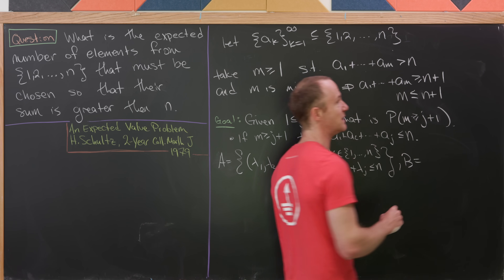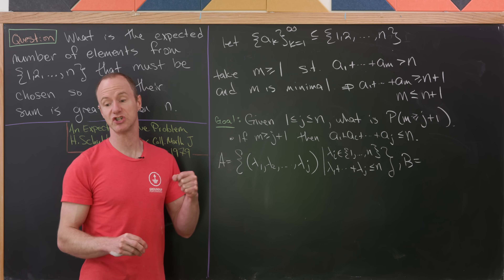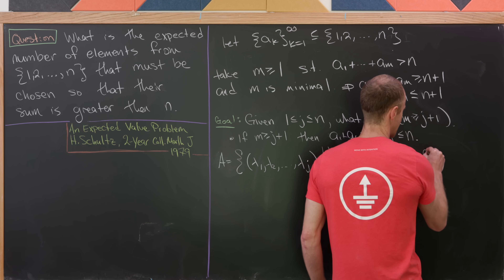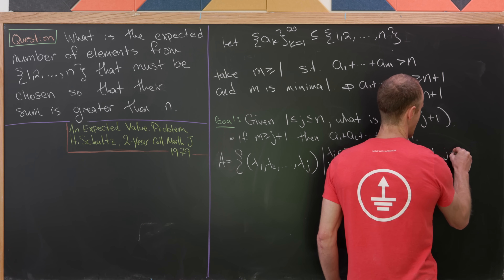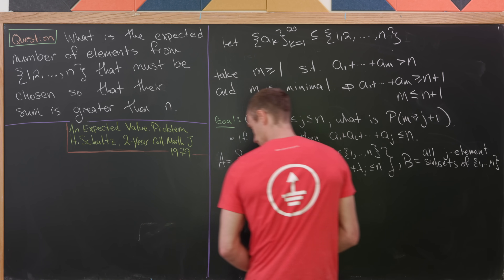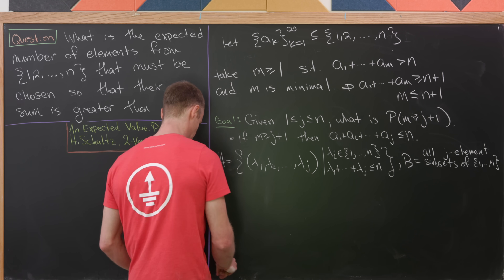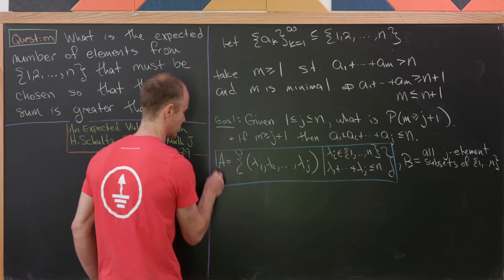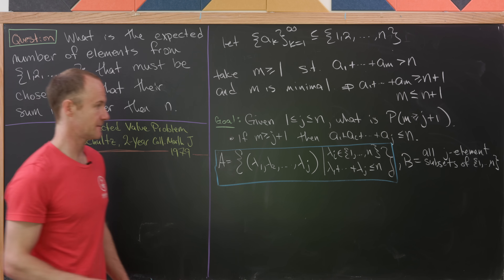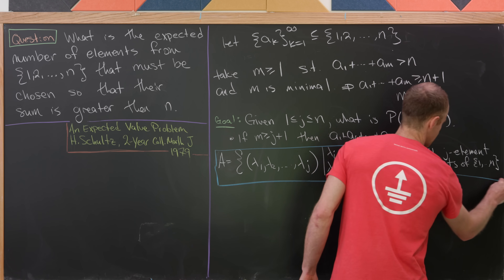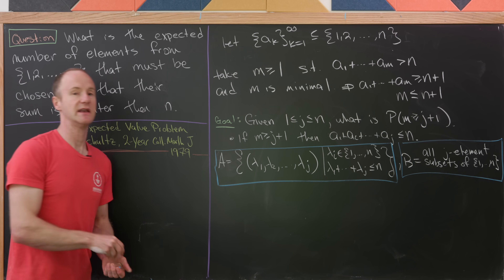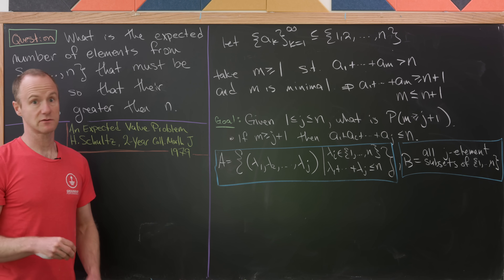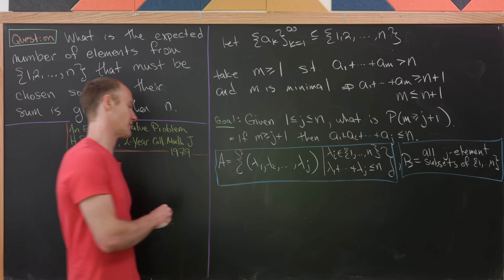Let B be the set of all j-element subsets of one through n. Now let's box these off so they're easier to pick out: there's our set A, and over here this is our set B. Next, we're going to define a function that turns out to be bijective from A to B.